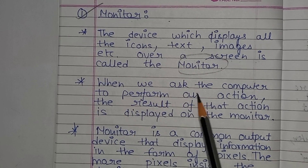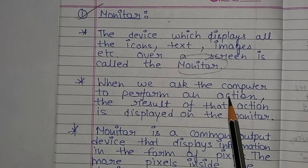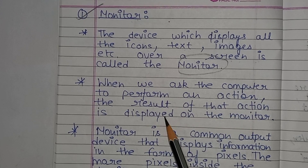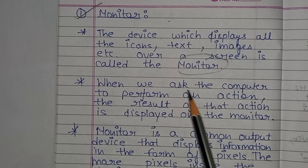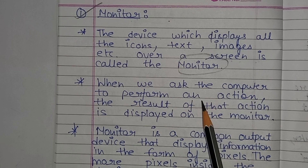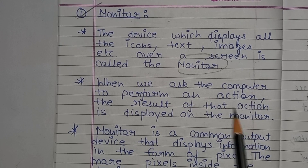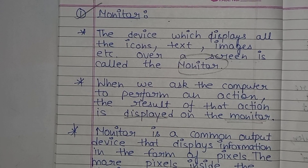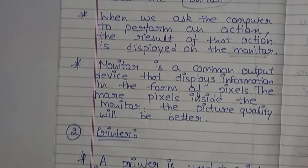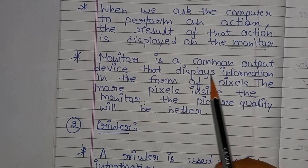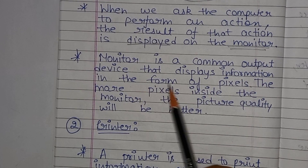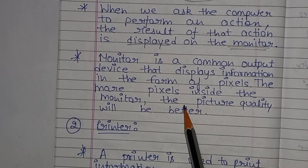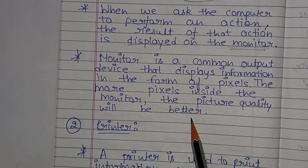When we ask the computer to perform an action, the result of that action is displayed on the monitor. The monitor is a common output device that displays information in the form of pixels. The more pixels inside the monitor, the better the picture quality will be.